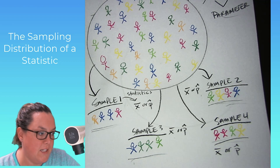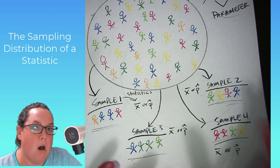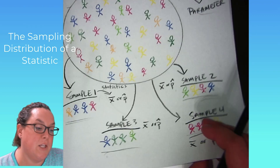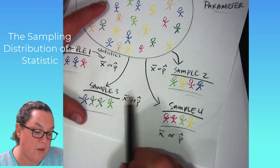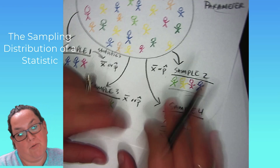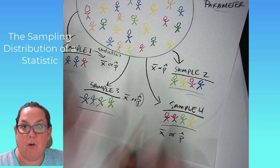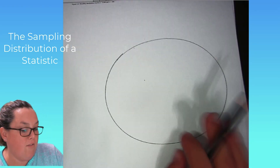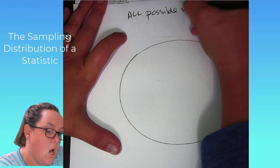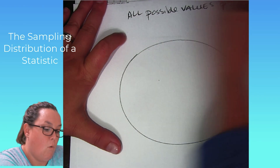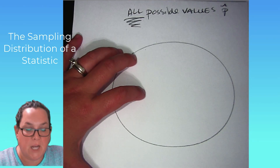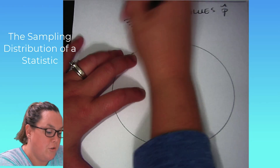They're all coming from this same population, but because the sample is different, because it's a different random sample, I have different values for x-bar and different values of p-hat. The parameters didn't change, but the statistics did change with different samples. Now, hypothetically, if you decided to take every single conceivable random sample — here we were doing size four — you kept doing it until you got every possible combination, or all possible values of x-bar or p-hat.